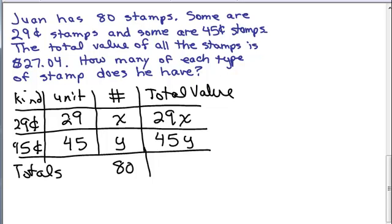It doesn't make sense to say the total for the unit value. You can't mix those values up. But the total value of the stamps, and here we have to be very careful, is 27-dollars and 4 cents.